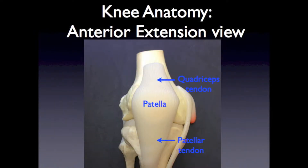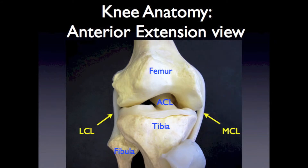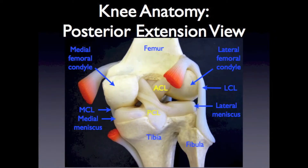On the anterior view of the knee, you can appreciate the patella within the quadriceps tendon and the patellar tendon. In addition, on the medial and lateral aspects of the knee are the MCL and LCL, respectively. On the posterior view of the knee, the ACL and PCL are visible, crossing each other within the joint.